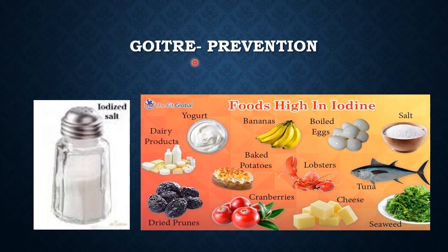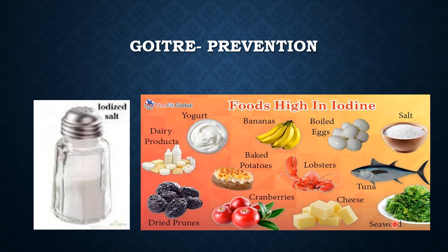To prevent goiter, the easiest way is to have iodized salt. Iodized salt is salt from which impurities have been removed and small amounts of iodine mineral have been added to it. Iodized salt is very essential for the normal functioning of the thyroid gland. Apart from that, food items rich in iodine include iodized salt, boiled eggs, bananas, yogurt, dairy products, dried prunes, cranberries, baked potatoes, lobsters, cheese, tuna fish, as well as seaweed — a weed found in the sea which is edible.